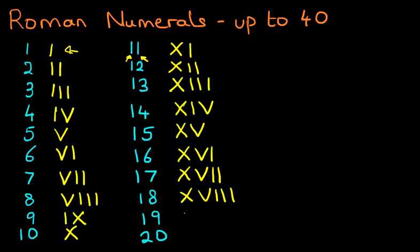How do we do nineteen? Well, we write the X for ten, and the nine is one before ten, so we write down one before ten. That is nineteen. Twenty is X-X.